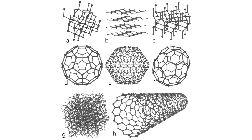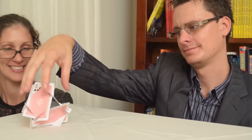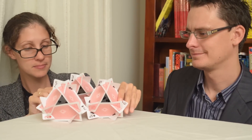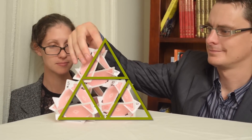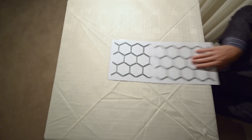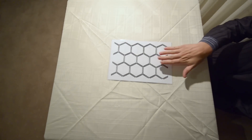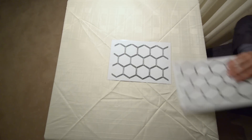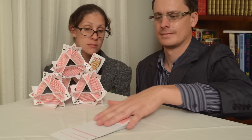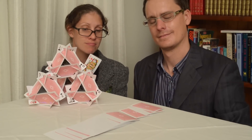Carbon comes in many forms, but what makes them different is how the carbon atoms bond to each other. Diamond has a tetrahedral structure which gives it its strength and durability. In graphite, the carbon atoms are bonded in a sheet-like structure which allows the sheets to slide over one another, like playing cards for example.